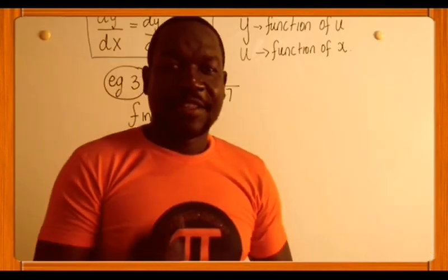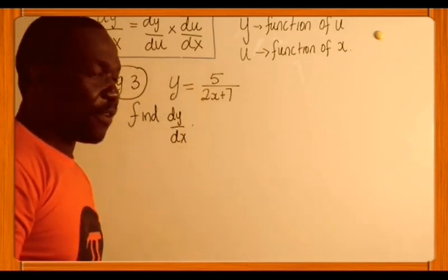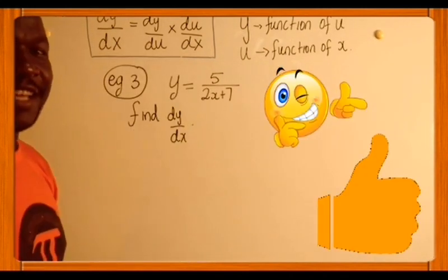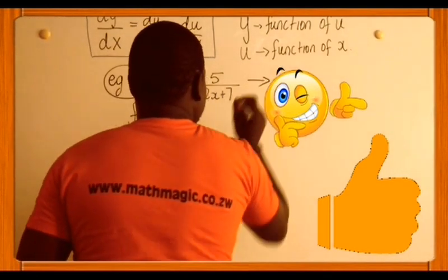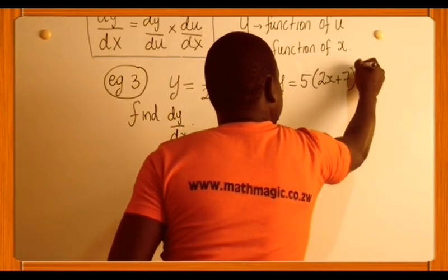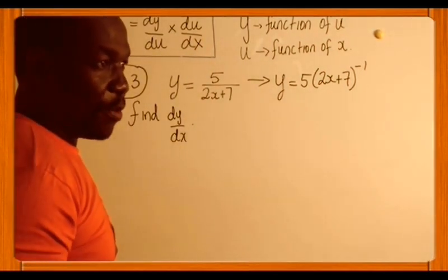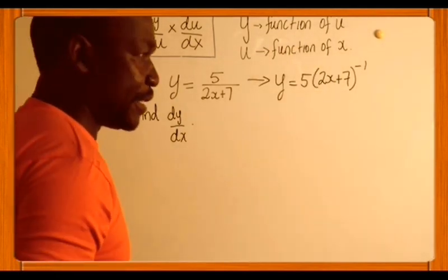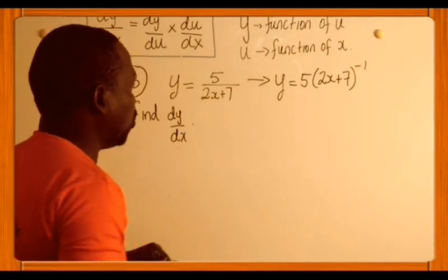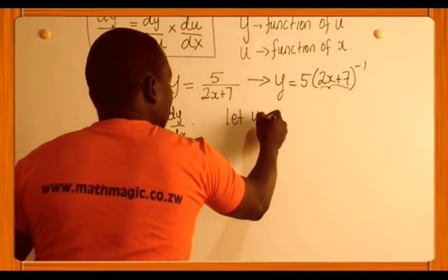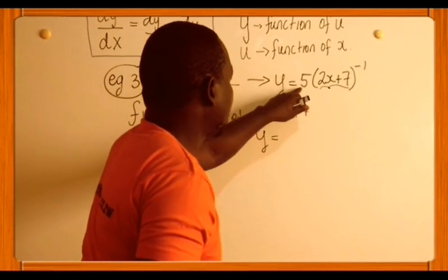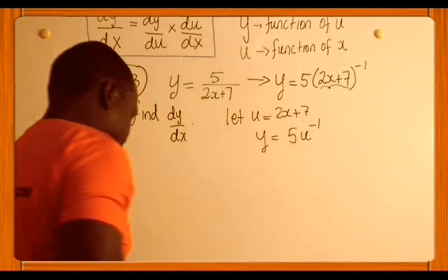Moving to example 3, our third and final example. We have y equal to 5 over (2x plus 7) and we want to differentiate. The first thing: use indices again to bring the denominator up. So y equals 5 times (2x plus 7) to the power of negative 1. If you have something on the denominator, use indices; if you have a square root, use indices.